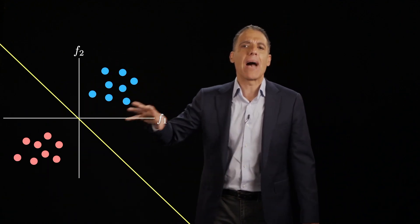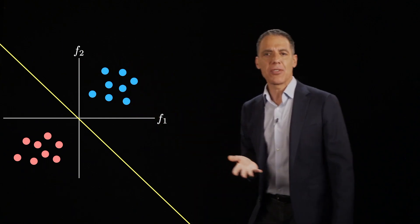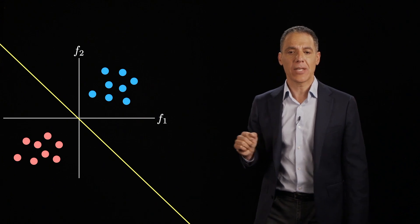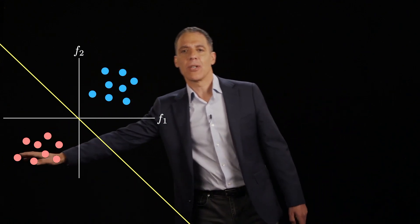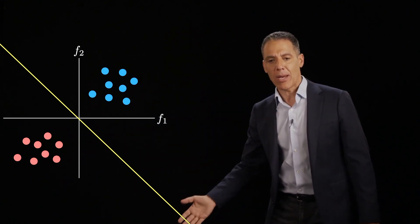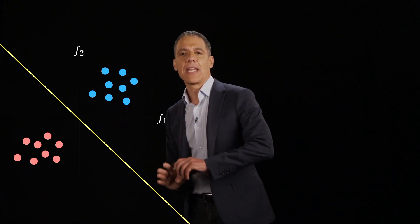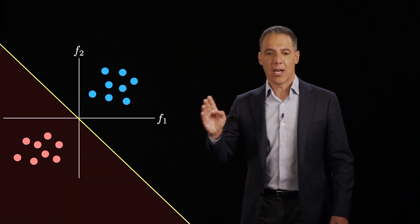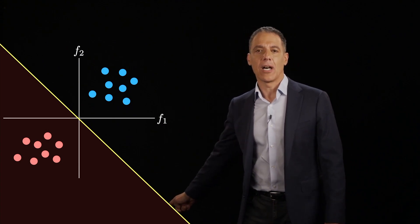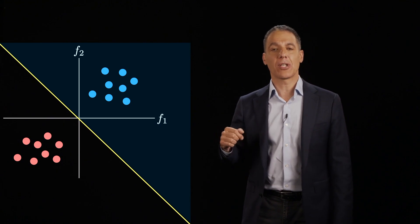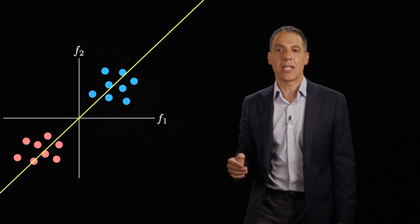So maybe instead of trying to bound the data, maybe we should think about it as a separation problem. How do I separate the data? I have class one here, class two here. And maybe what I want to do is draw a division between them to say anything that is down is going to be one class and anything that is up is going to be another class. That's another way to think about the classification problem.